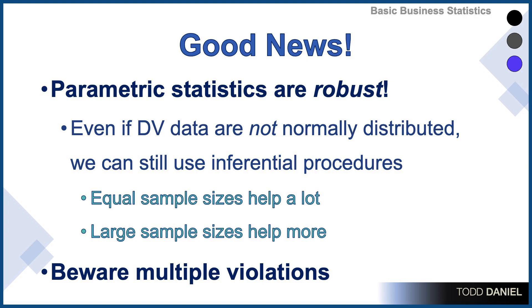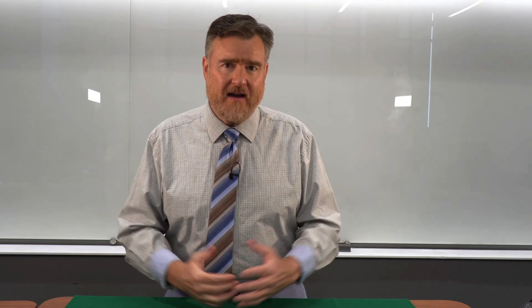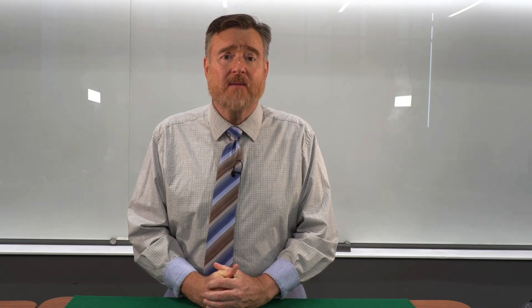Parametric statistics are robust. Even if the dependent variable data are not normally distributed, we can still use inferential procedures. It will be very helpful if the sample sizes for our groups are equal, and if we have a large overall sample size, that will help even more. However, we must beware multiple violations. If your dependent variable is not normally distributed and the sample sizes of your groups are not equal, or you have other violations in your data, then you're going to need an alternative — you cannot use a parametric test.